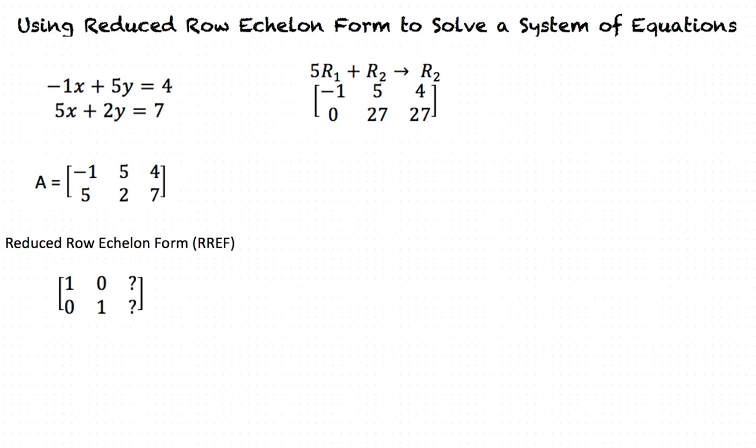Now, we must make our first pivot point equal to 1 instead of negative 1. We do this by multiplying the first row by a scalar of negative 1. This will result in 1, negative 5, negative 4, row 2: 0, 27, 27.